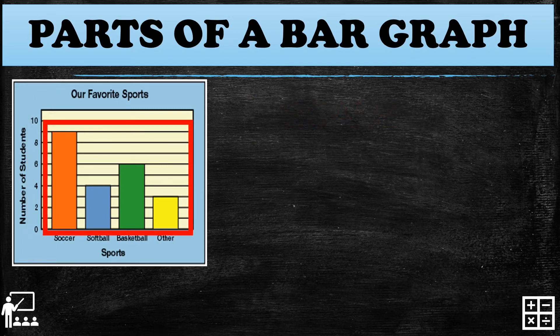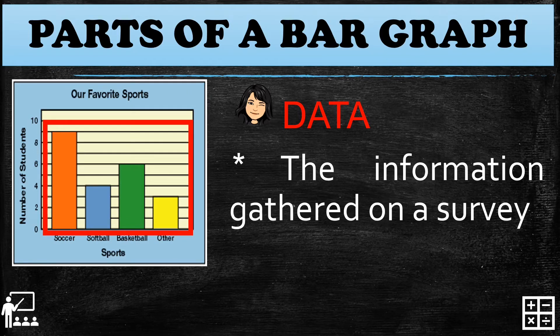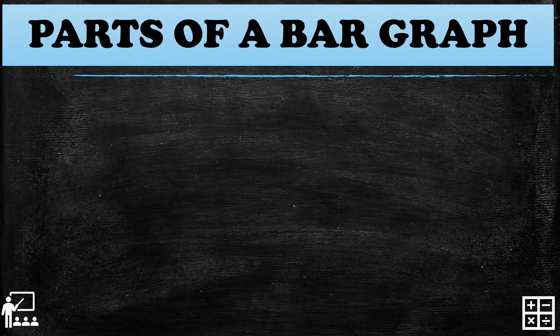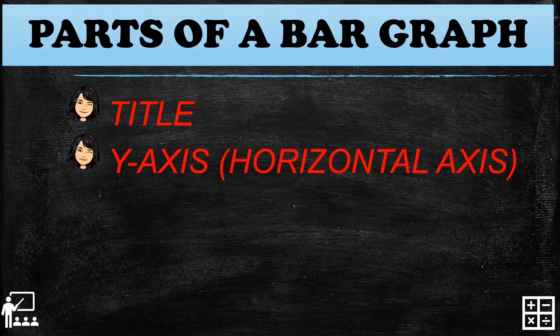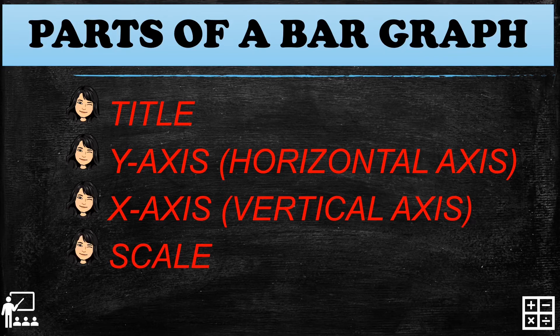The last and important part is the data, or the data gathered on a survey or the information gathered on a survey. You can use any colorful representation of each data, but remember you are using a bar graph, so use bars. So again, the parts of the bar graph are: the title, the y-axis, the x-axis, the scale, and the data.